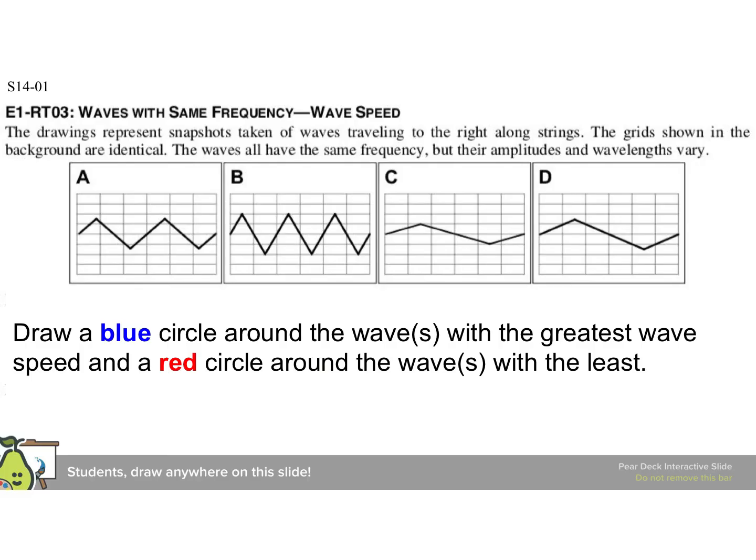The drawings here represent snapshots of waves traveling to the right along strings. The grids are identical. The waves have the same frequency, but their amplitudes and wavelengths vary. And you're asked to draw a blue circle around waves with the greatest wave speed, and a red circle around waves with the least wave speed. And here we want to highlight they have the same frequency, but different wavelengths. In fact, we can see these are what we had before.